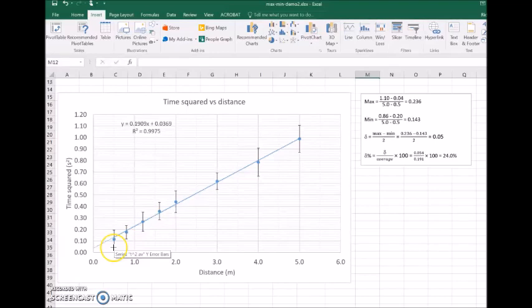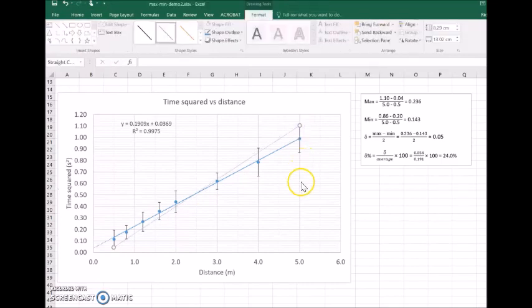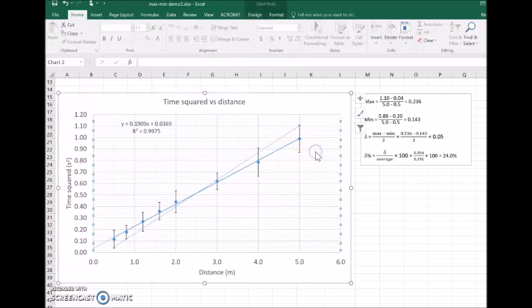I start at the bottom of my error bar down here and then I draw a line with maximum gradient to the top of the error bar there. Now I check to make sure the line is within all the error bars, and you can see it certainly is.